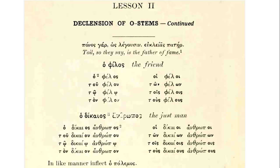We got a taste of this in the first lesson when we saw that there's not just one word for 'the' within Attic Greek as there would be in modern American English — 'the' undergoes no changes to show whether it is being used subjectively, objectively, etc. But within Greek, we see these different forms of 'the': o, tu, to, ton, etc.